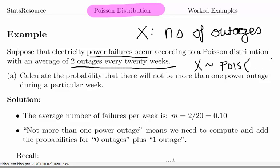The Poisson mean is 0.1. If you expect two outages in 20 weeks, you expect on average 0.1 outages per week, or equivalently, one every 10 weeks.